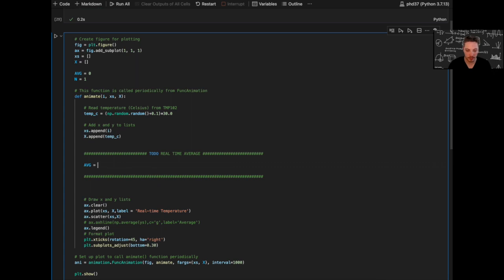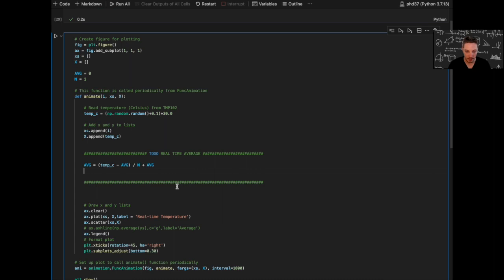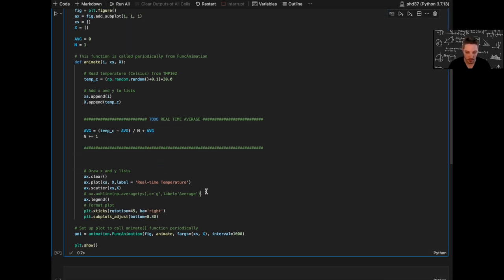Based on the formula that we developed, the new average equals the new data minus the old average, divided by the number of elements, plus the old average. Now the only thing left is to advance the number of variables that have already been recorded.